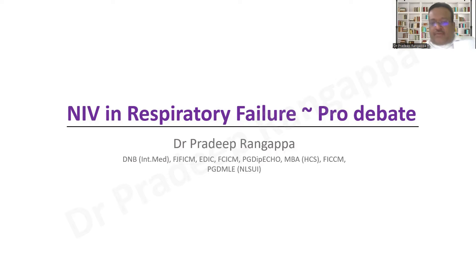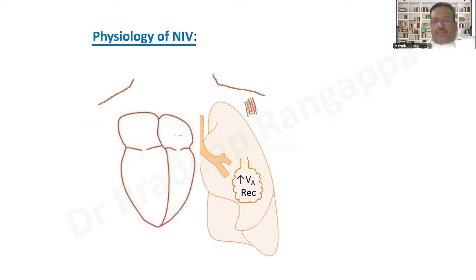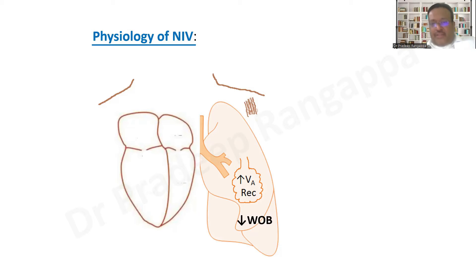My approach to this debate is to look into the physiological basis of NIV. For trainees, there is a separate video on NIV you can refer to. There are five elements in which NIV is beneficial. First, it improves alveolar ventilation — shown beyond doubt. Second, it significantly reduces the shunt fraction and recruits alveoli, thereby circumventing the shunt fraction, which is the commonest cause of respiratory failure.